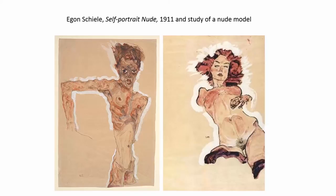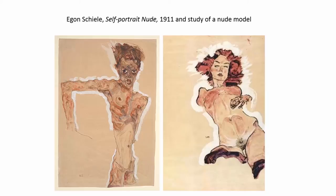Egon Schiele's subject matter was often self-portraits and studies of nude models, which were often underage girls. He married a 17-year-old artist's model, and then they went to different villages to live because the villagers didn't like them using underage girls as models. Schiele was briefly accused of improper behaviour towards an underage girl but was acquitted. He liked to paint and draw very raw, skinny, sexy paintings and drawings of the human body and faces.